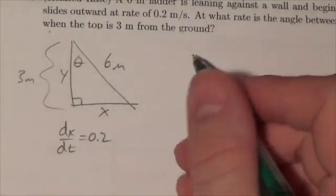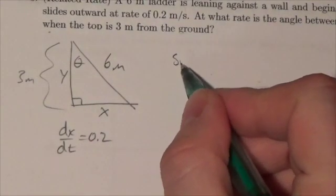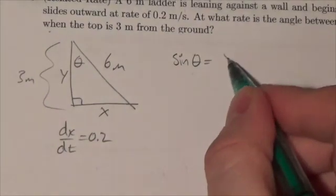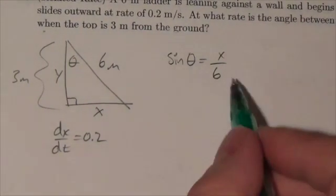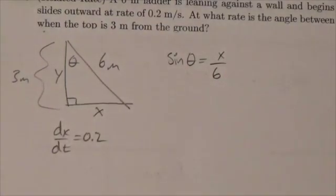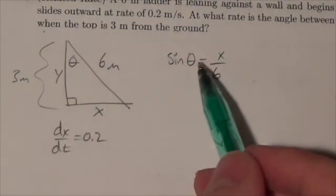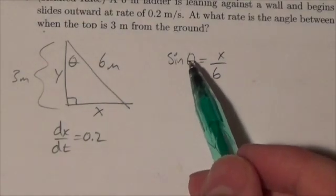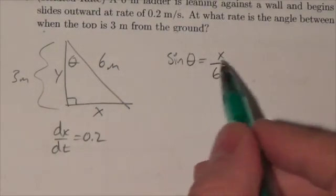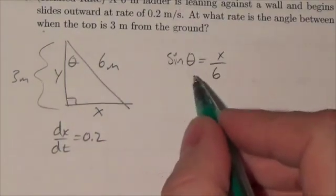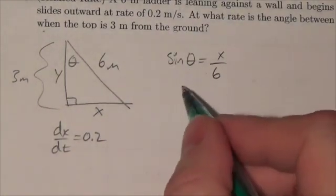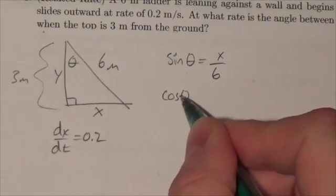So what we might say here is the sine of theta equals x over 6. Now the nice thing about that is 6 is a constant; it isn't going to change, so that's good. You want to have these things with as few variables as possible. Here I've only got two, so if I take the derivative of this, the derivative of sine is cosine of theta.